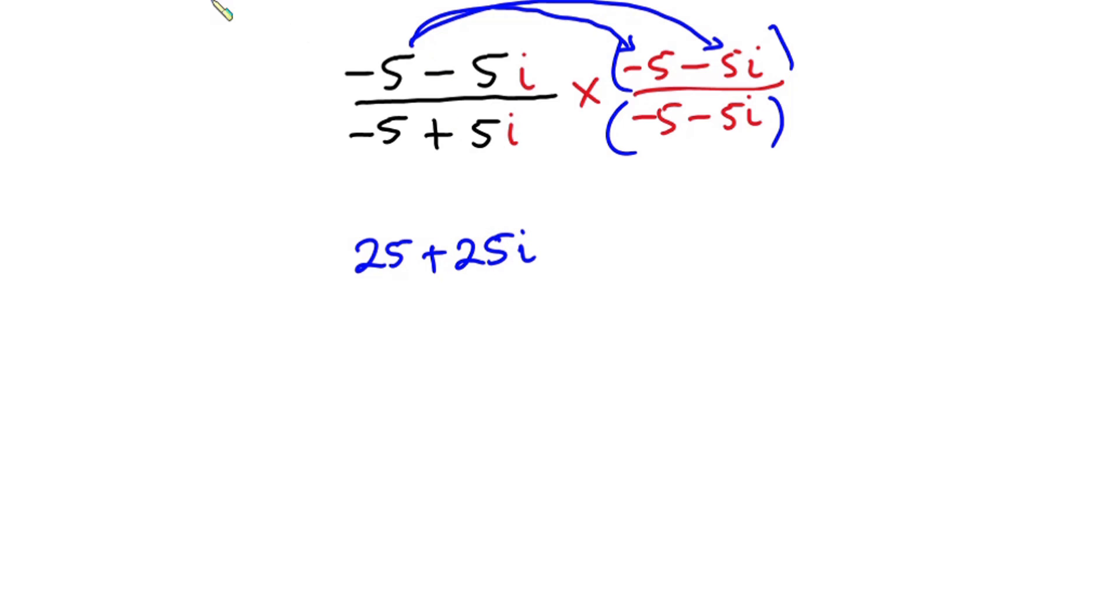So we are done with this one. Now let's focus on this. We take this one and then multiply by this negative 5i times negative 5. That is positive 25i. Then we take this one again and then multiply it by this. So we have negative 5i times negative 5i. And that gives me positive 25i squared. So we are done. All divided by...